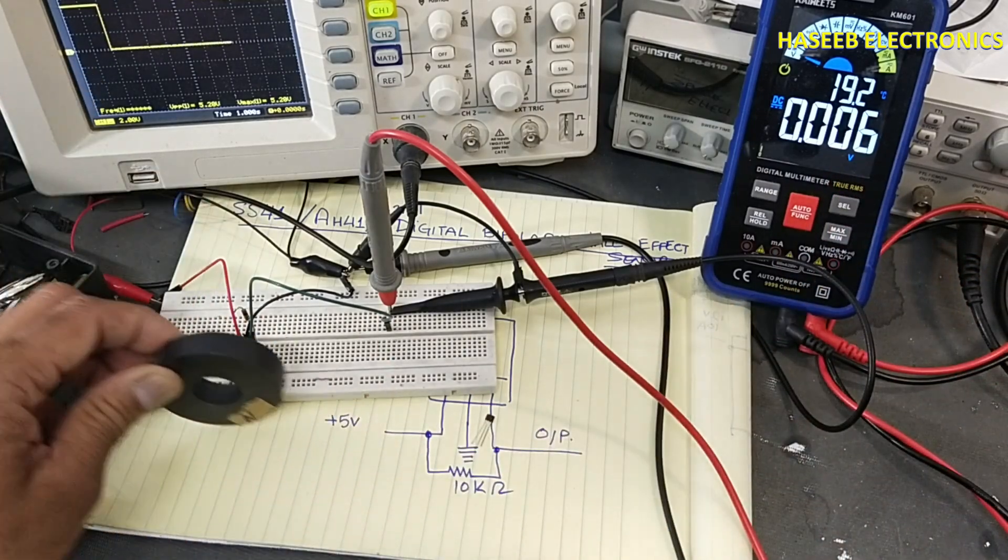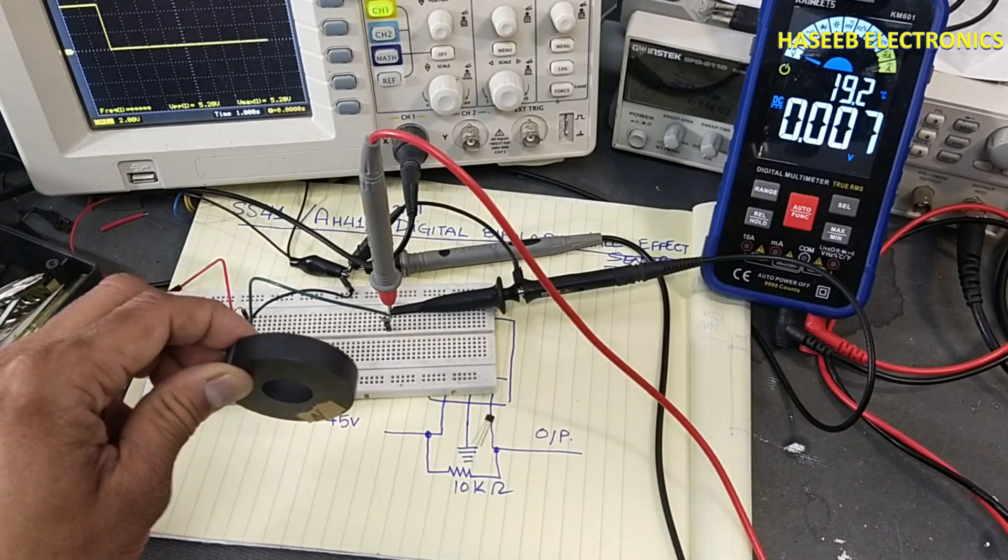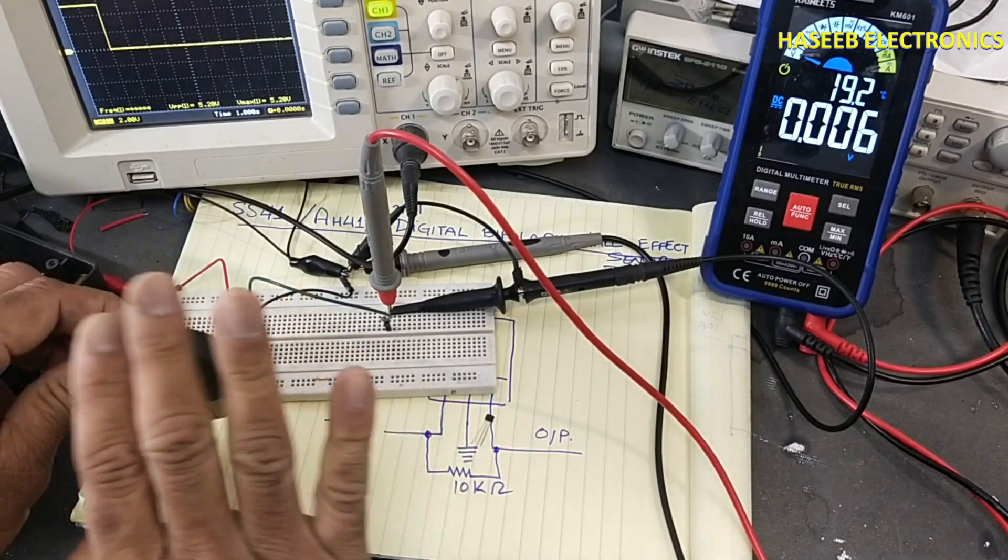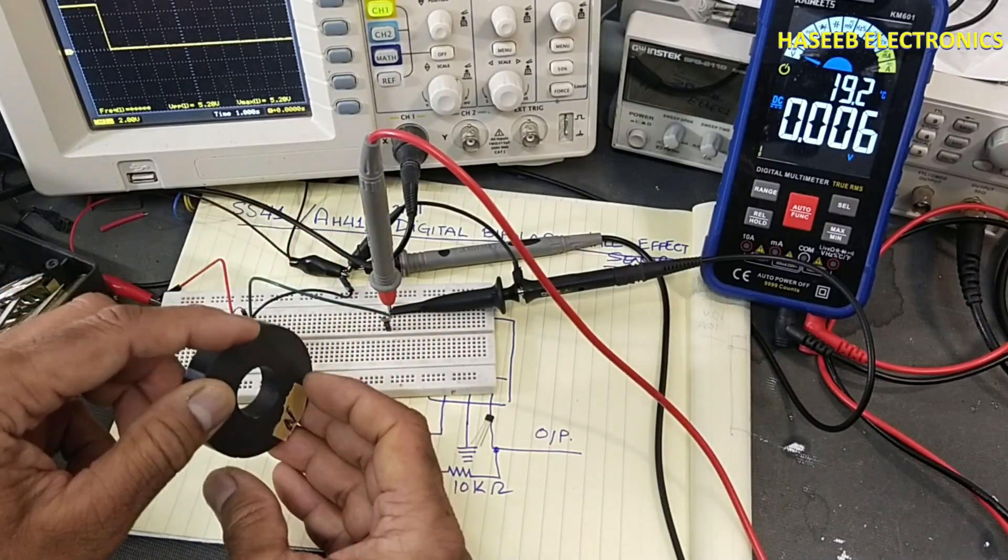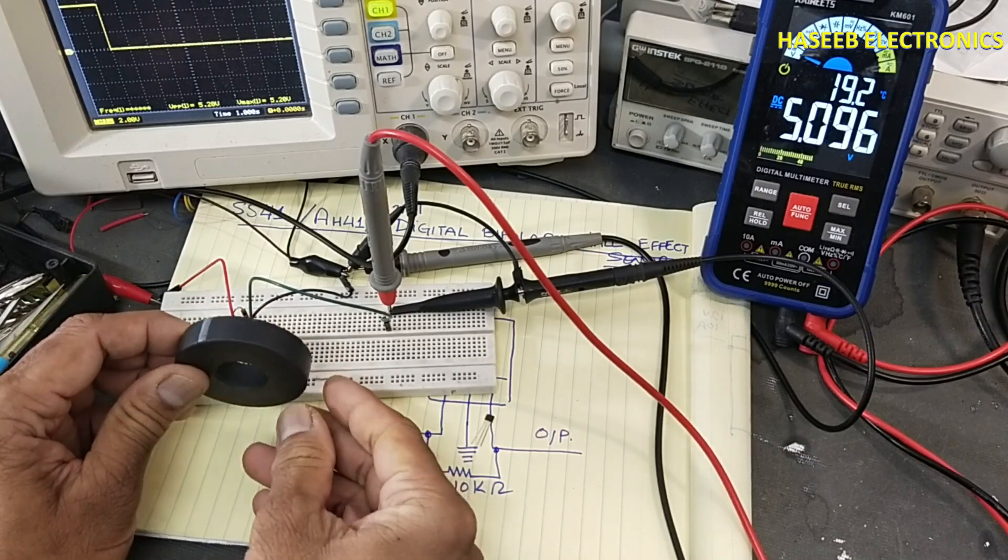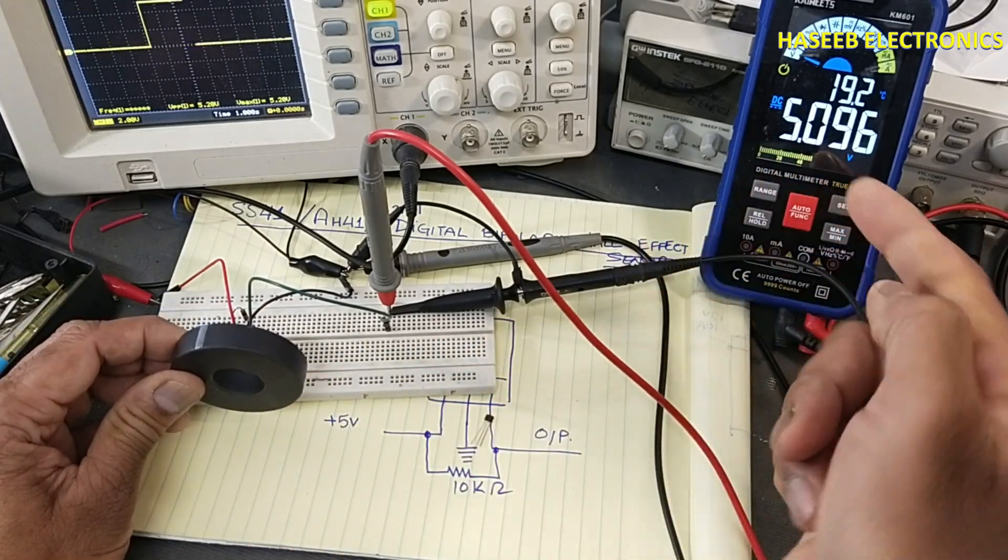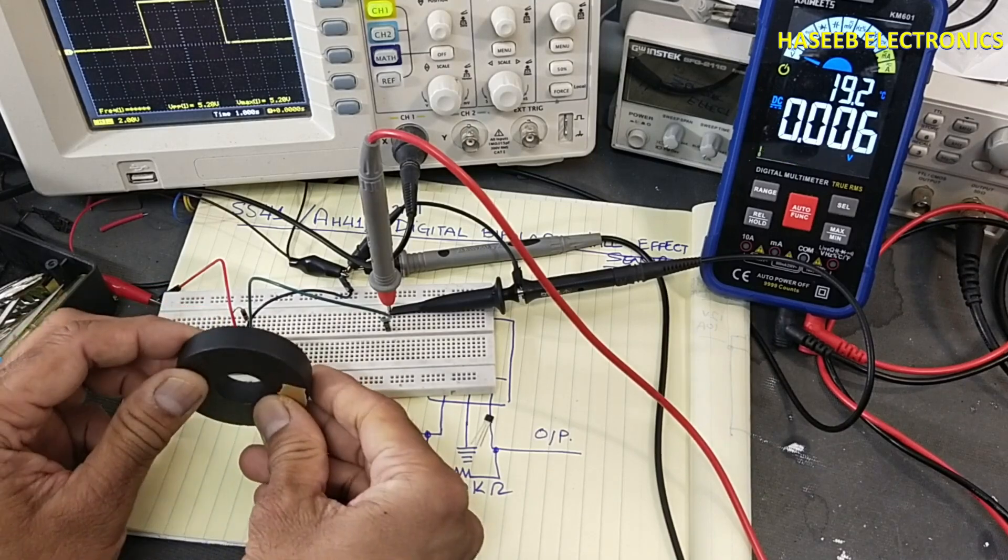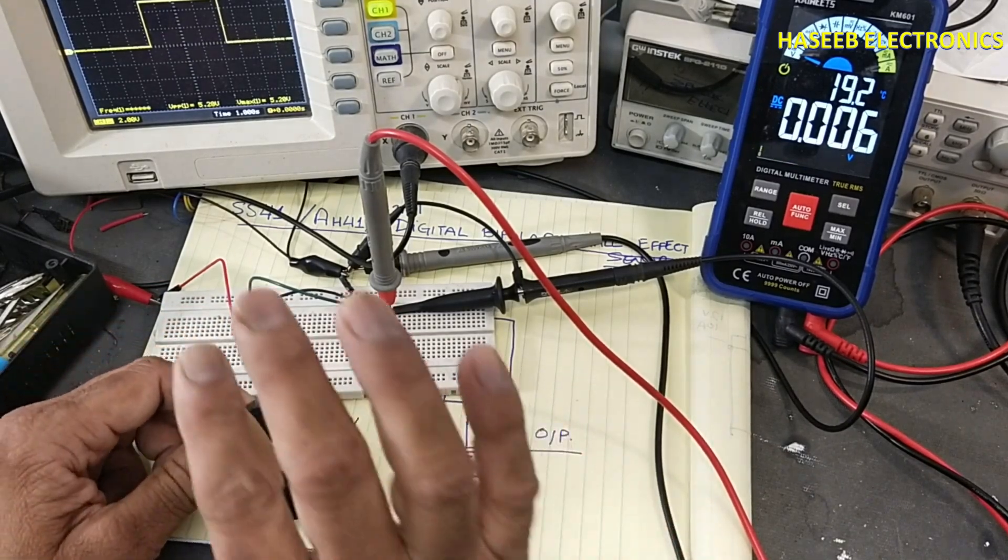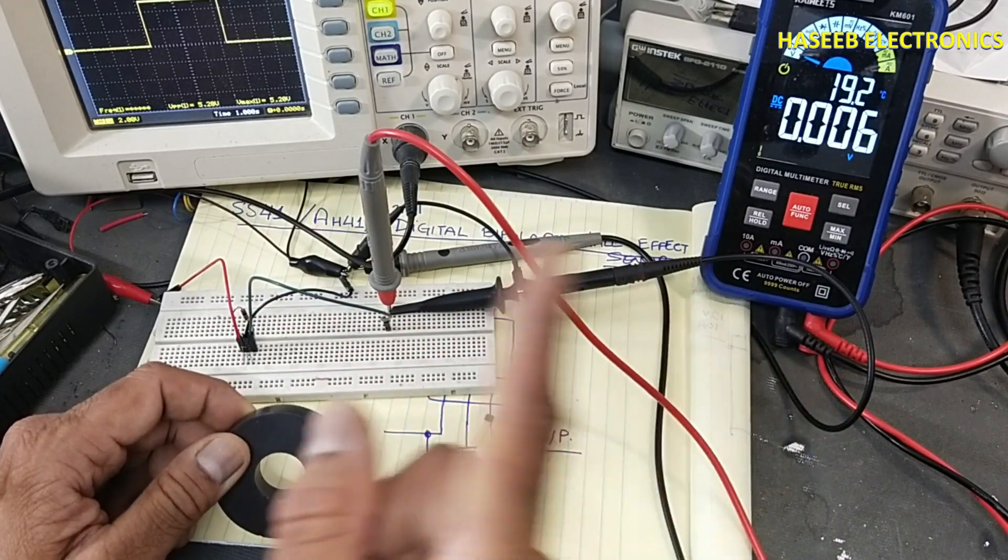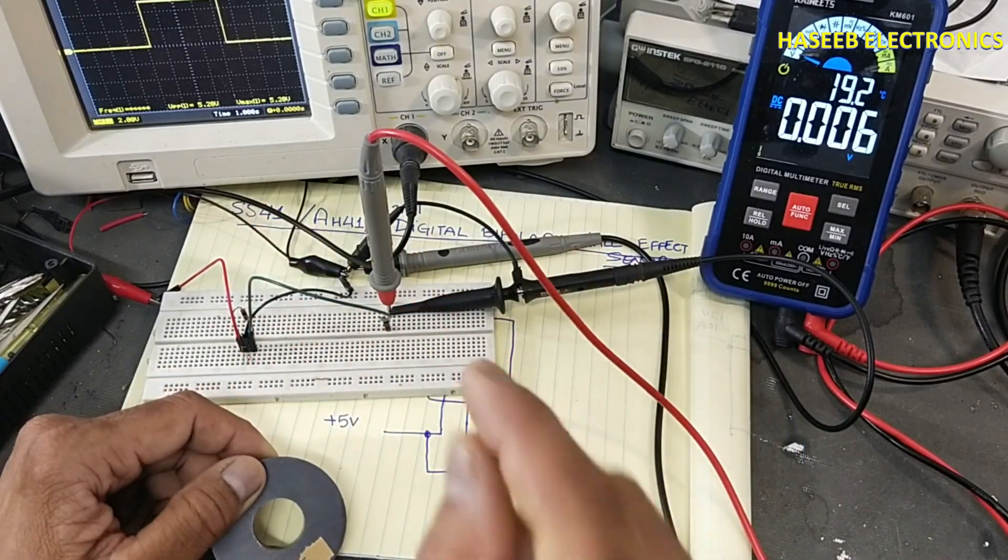It will remain low. It needs north pole to give high output and south pole to low output. This is bipolar magnet. It will sense north and south.